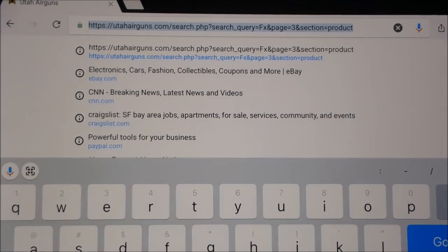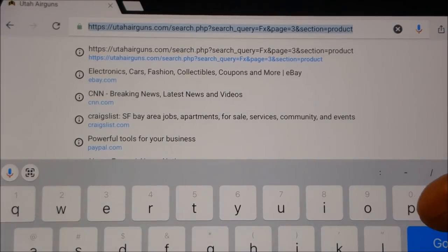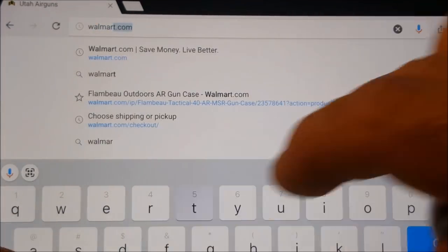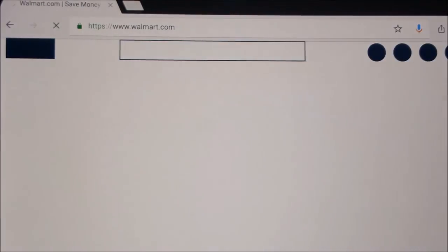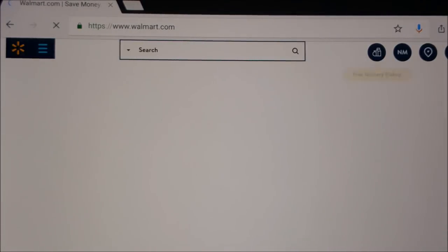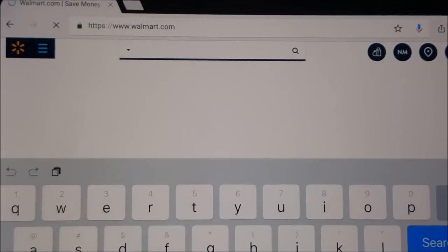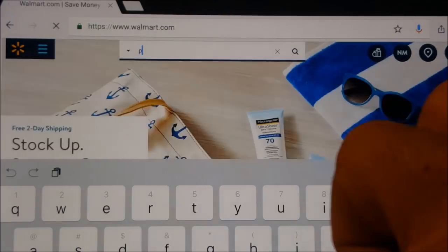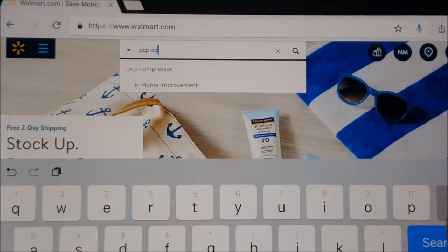Alright guys, I'm about to bust out the new $300 PCP compressor that they have from Yonghang. So the way to order one is go ahead and type in walmart.com. Go to Walmart. Now you can get these off eBay as well for the same price but I like to buy my stuff from Walmart because I know it's not counterfeit. It's not a generic compressor that someone just spray painted the logo on the side of. So I'm going to put PCP compressor.